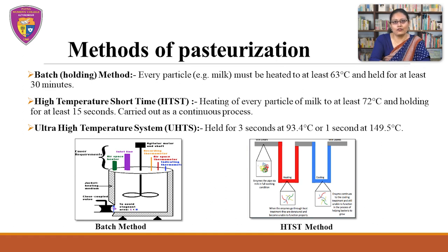There are a number of basic methods of pasteurization widely used in the industry. The first is the batch method, also known as the holding method, in which every particle of food — basically milk — must be heated to at least 63 degrees Celsius and held for at least 30 minutes. Another method is high temperature short time (HTST), in which milk is heated to at least 72 degrees Celsius and held for at least 15 seconds, carried out as a continuous process. The third method is the ultra high temperature (UHT) system, which results in complete pasteurization of milk. In this system, milk is held for 3 seconds at 93.4 degrees Celsius or 1 second at 149.5 degrees Celsius. This system is also used extensively for the treatment of milk or cream in dairy industries.